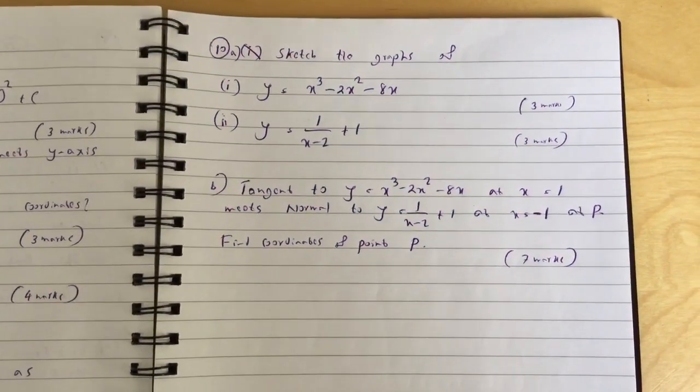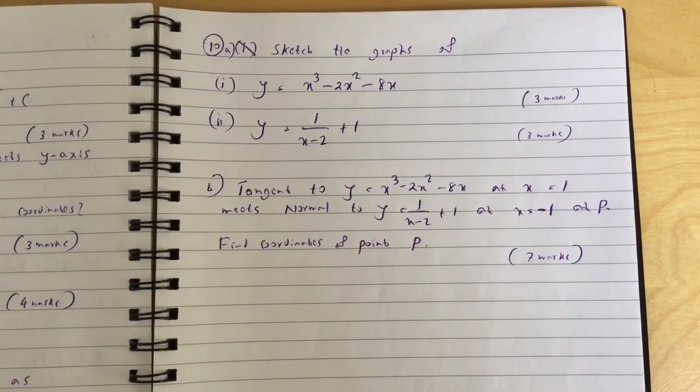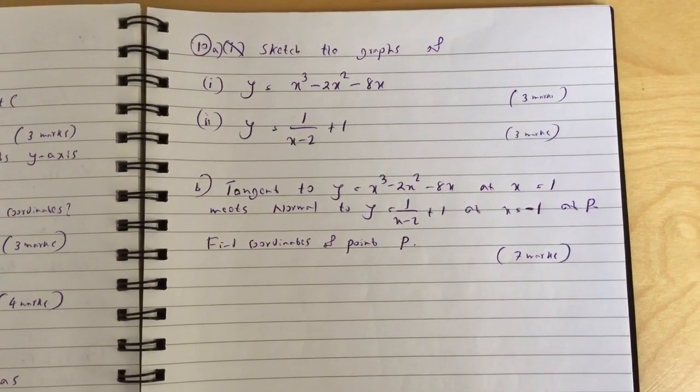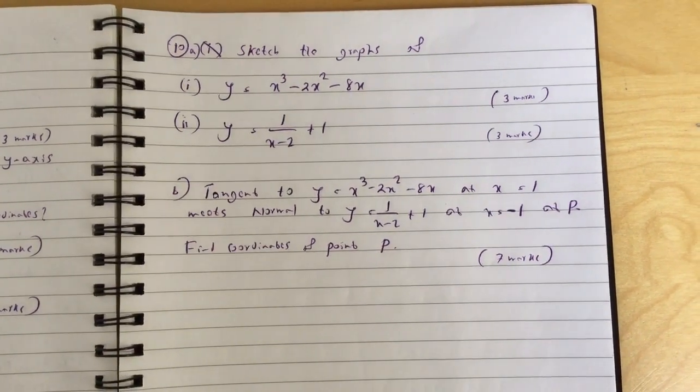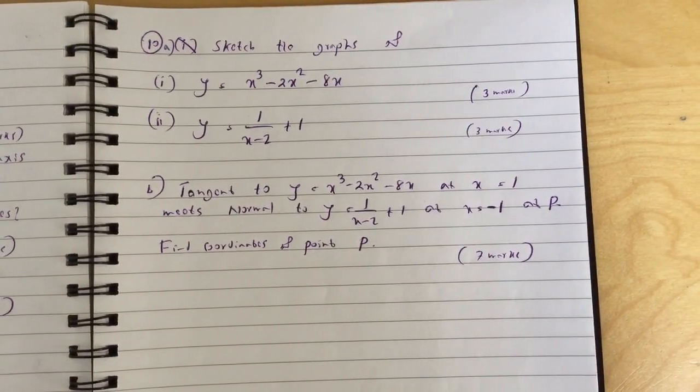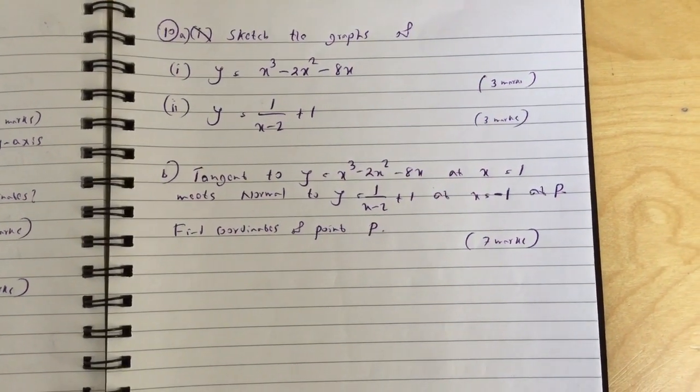Question 10, part a: Sketch the graphs of y equals x cubed minus 2x squared minus 8x, and y equals 1 over (x minus 2) plus 1. Show the coordinates of any intersections with the axes.